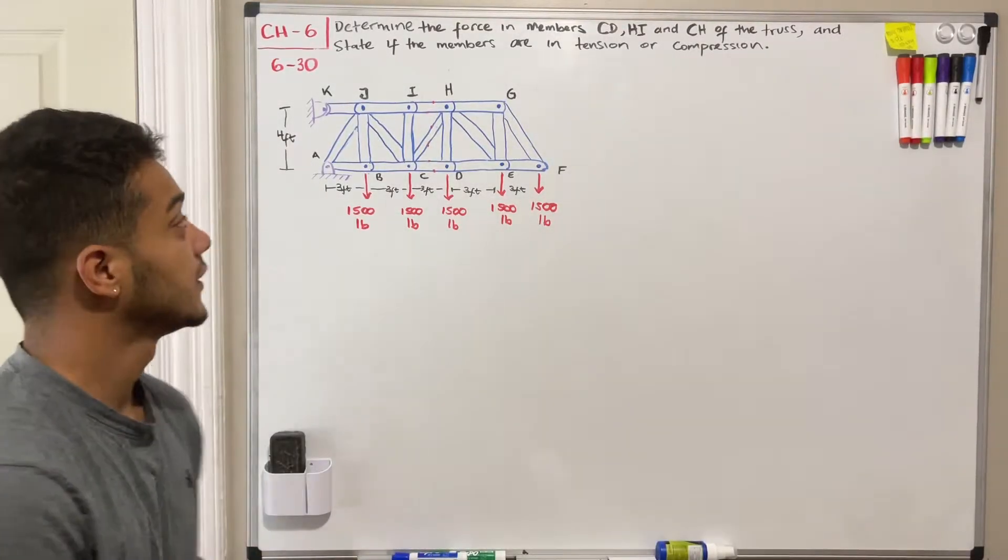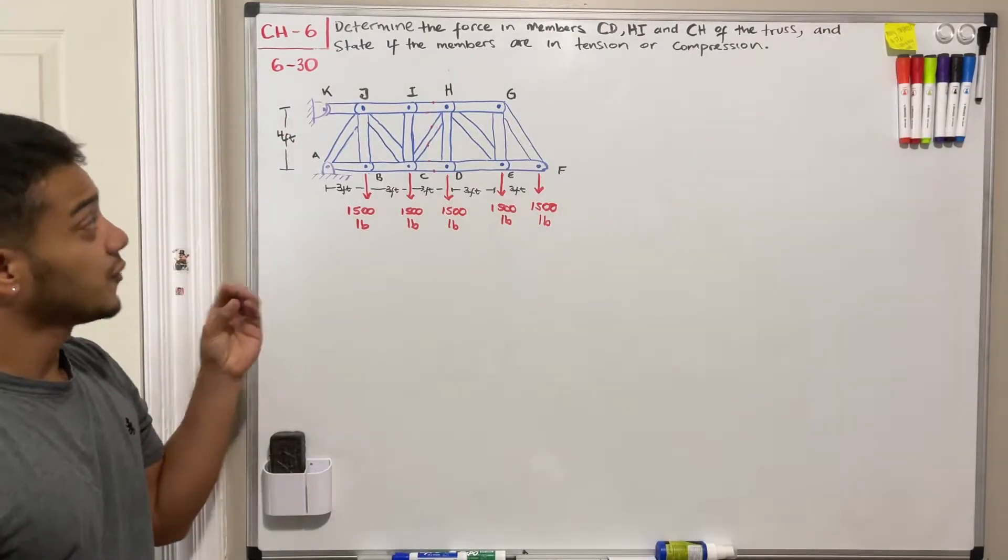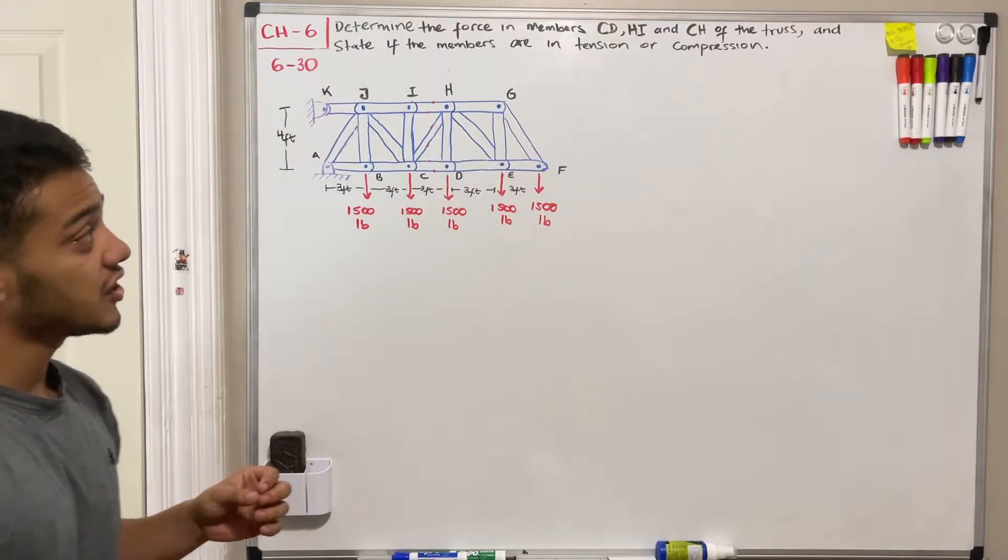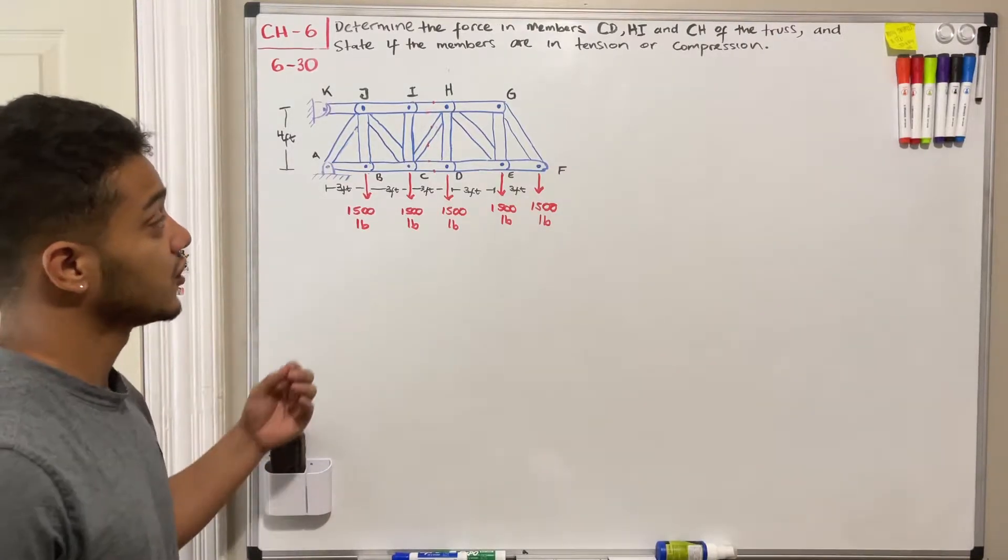Welcome back everyone to learning by teaching, learning statics, and today we're going to do problem 6-30. It says, determine the force in members CD, HI, and CH of the truss, and state if the members are in tension or compression.